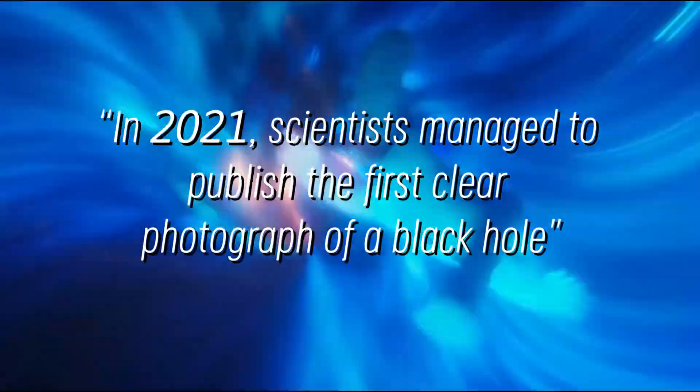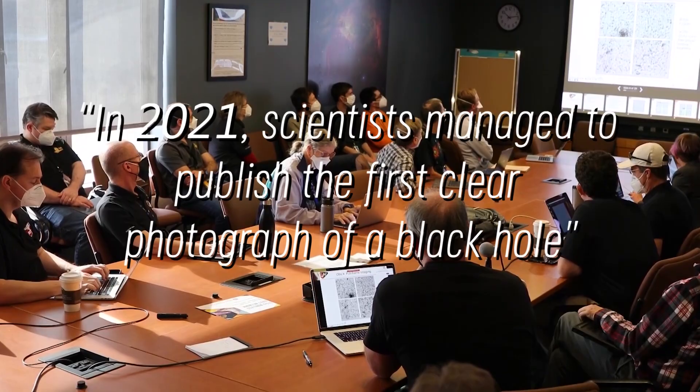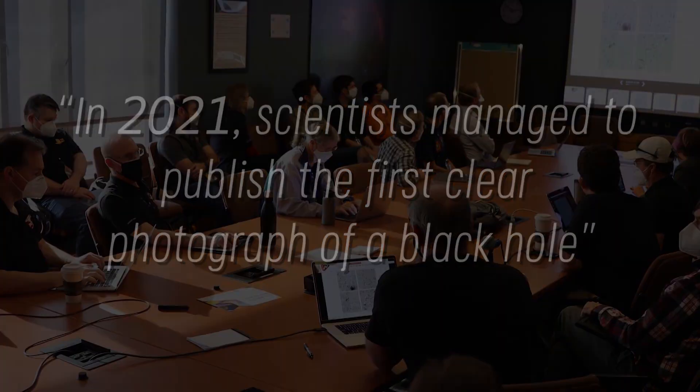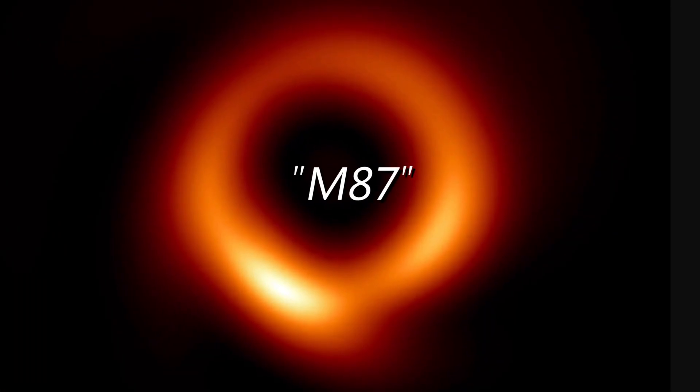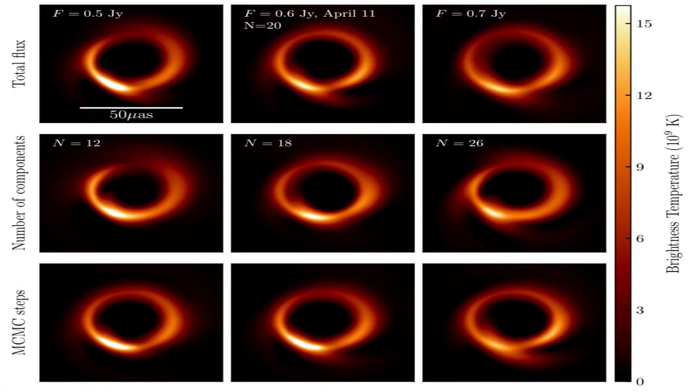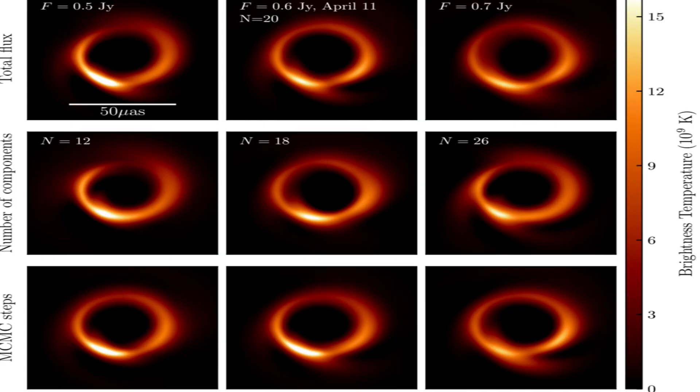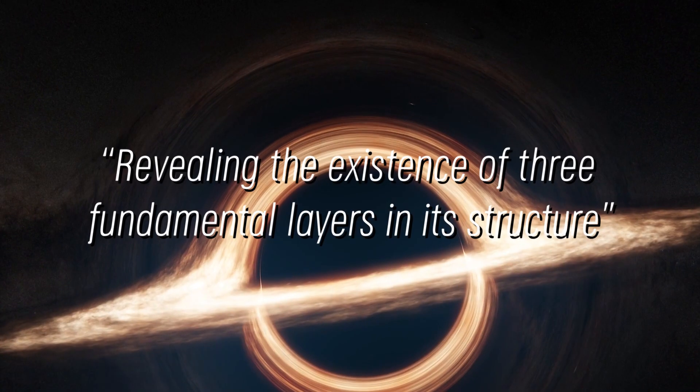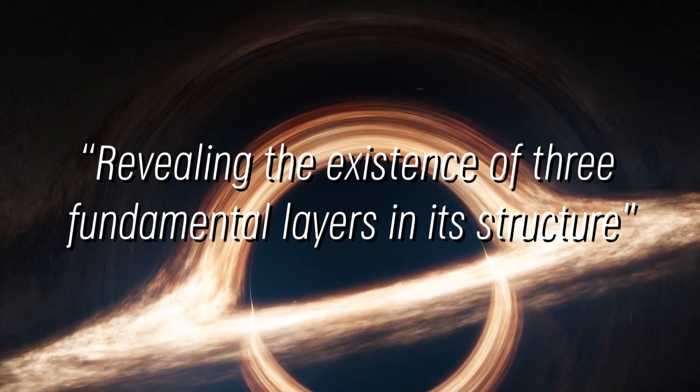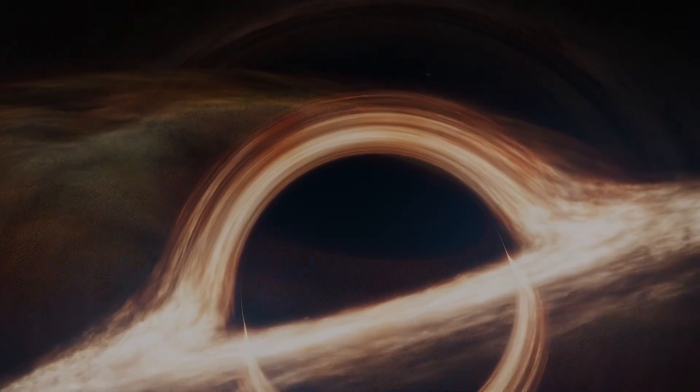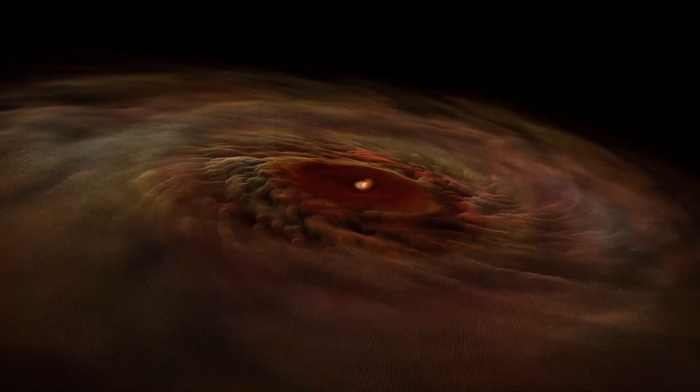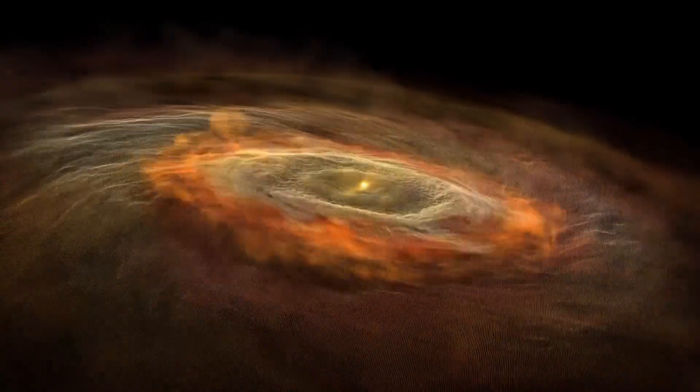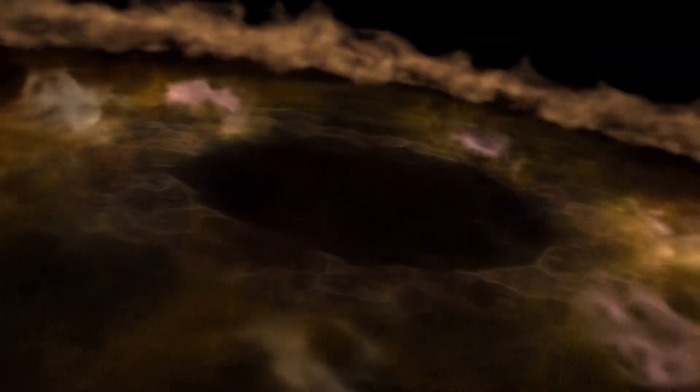In 2021, scientists managed to publish the first clear photograph of a black hole, specifically the black hole M87. The black hole was photographed for several nights in a row, and with each image, researchers collected more and more evidence about it, revealing the existence of three fundamental layers in its structure. That's right, a black hole is not just a lone hole in the void. To delve into the depths of its mystery, you need to understand the first two layers.